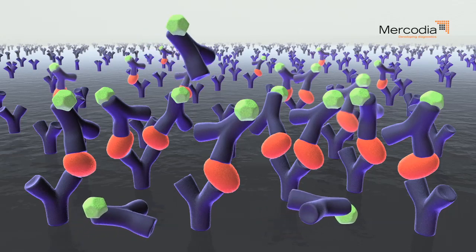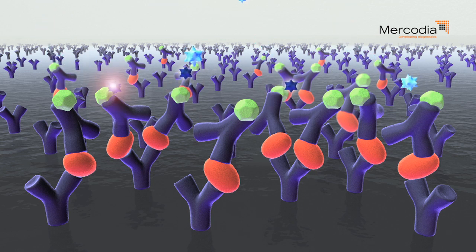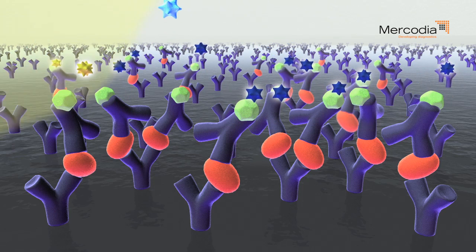Unbound antibodies are removed by a washing procedure to avoid background signal produced by interference. Substrate is added, which is converted by the enzyme to a chromogenic signal.